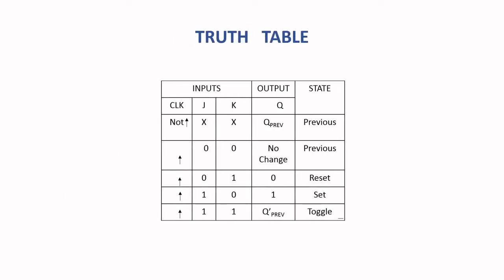The truth table of the JK flip-flop is given below. When the inputs are 0, 0 and clock is 1, the previous state will occur. When J and K are changed to 0 and 1, the output Q becomes 0 — that is, the reset state. When J becomes 1 and K becomes 0, the output is 1 — that is, the set state. And when J and K are both 1, the output toggles.